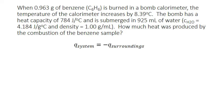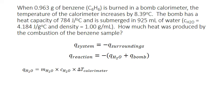The heat released by the benzene was absorbed by its surroundings — the calorimeter — which includes the bomb as well as the water surrounding it. So Q reaction equals the negative of the heat absorbed by the water plus the heat absorbed by the bomb. To calculate these, we use heat capacity formulas. For the water, we use the specific heat capacity formula: mass of water times the specific heat capacity of water times the change in temperature. We calculate the mass of the water: the density of water is 1 gram per milliliter, so 925 milliliters gives us 925 grams.